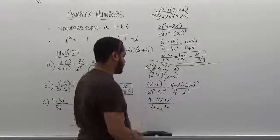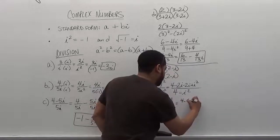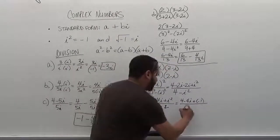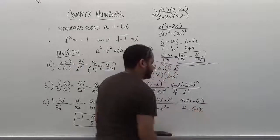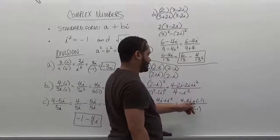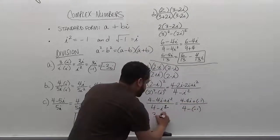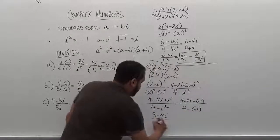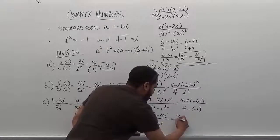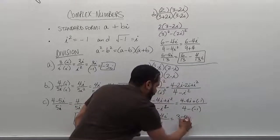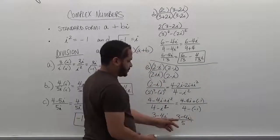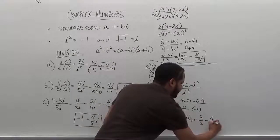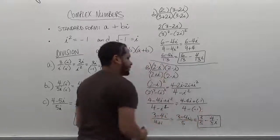We substitute negative 1 for i squared throughout. The numerator becomes 4 minus 4i plus negative 1, which simplifies to 3 minus 4i. The denominator becomes 4 minus negative 1, which is 5. So we have 3 minus 4i over 5. Splitting the fraction: 3 over 5 minus 4 over 5 i.